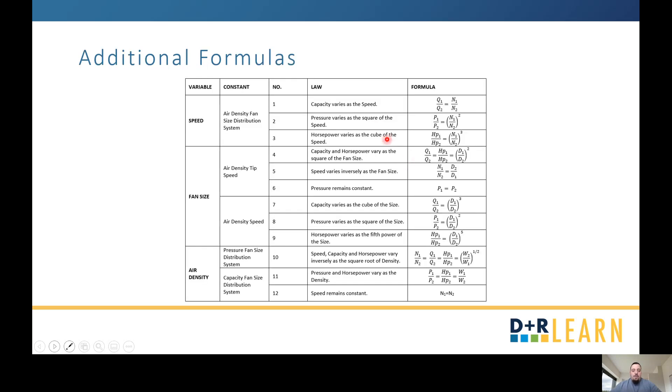Lastly, we're going to talk about these additional formulas here. These are all the different kinds of formulas that you can make depending on what is constant in your situation. Here we have constant air density and fan size, constant air density and tip speed, constant air density and speed, constant pressure with fan size and distribution system, and constant capacity with fan size and distribution system. You can use these to see theoretically what is my system going to be operating at and then compare it to what you're actually seeing. Or you can run these numbers and say, I'm supposed to be getting this certain value, this is what I'm getting here, what's going on? And it's a good way to help you troubleshoot.